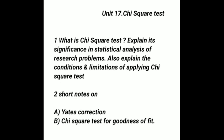Unit 17 is very, very important — that is the chi-squared test. First question: What is the chi-squared test? Interlinked: Explain its significance in statistical analysis of any research problem; also explain the conditions and limitations of applying the chi-squared test — its advantages, importance, limitations, and conditions. Question number two: Write short notes on Yates' correction, and second, the chi-squared test for goodness of fit. I suggest reading the short notes for each unit, as they are very important and the best way to score marks.